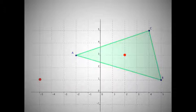And lastly, for our C-coordinate, which is at 4, 5, when we multiply that by negative 1, we get negative 4, 5.